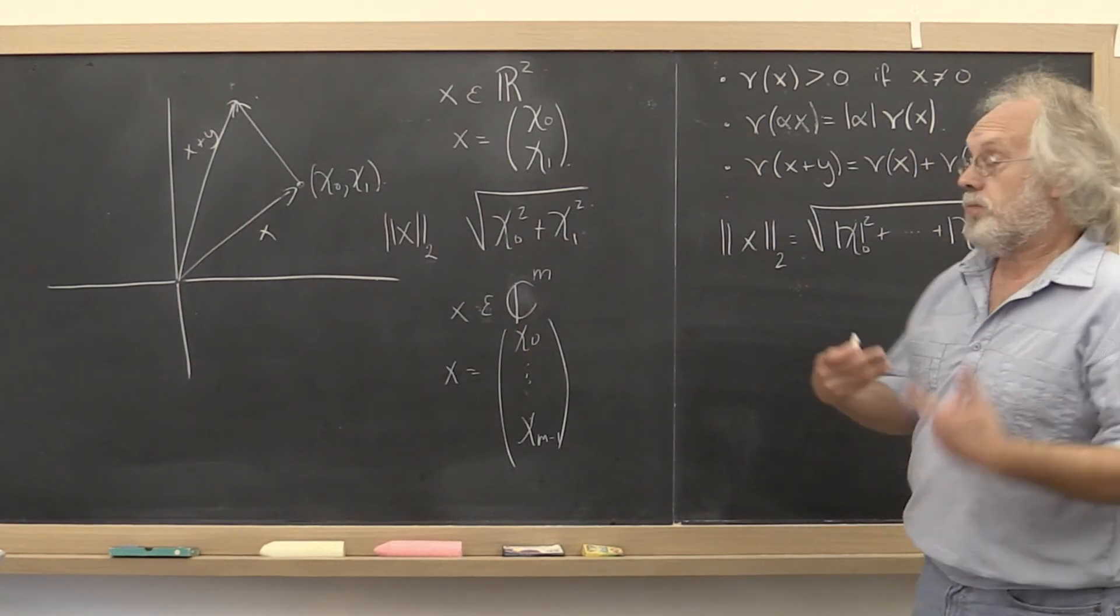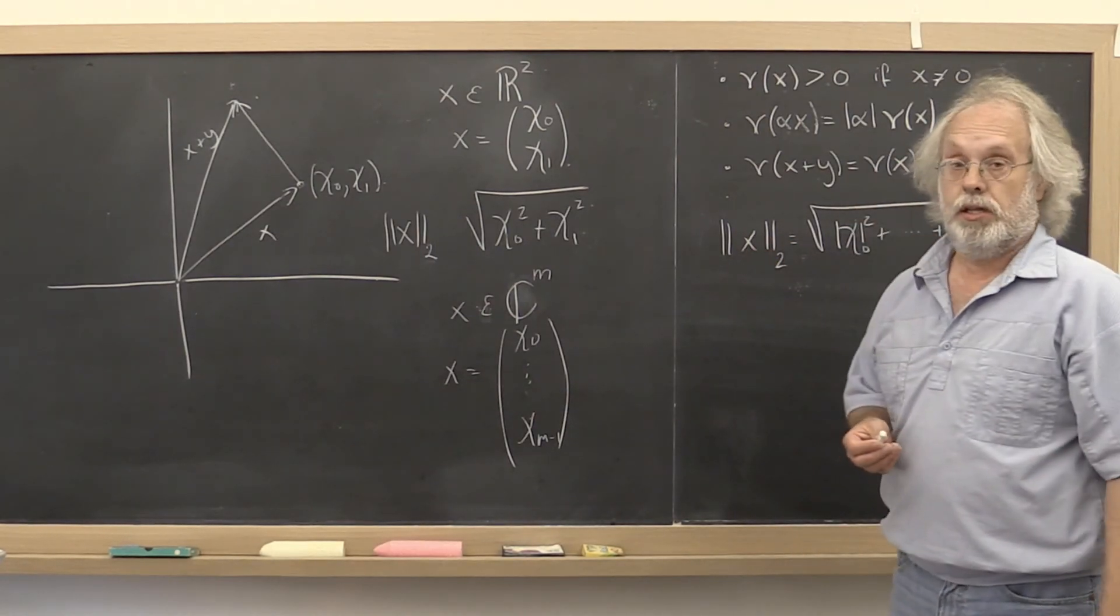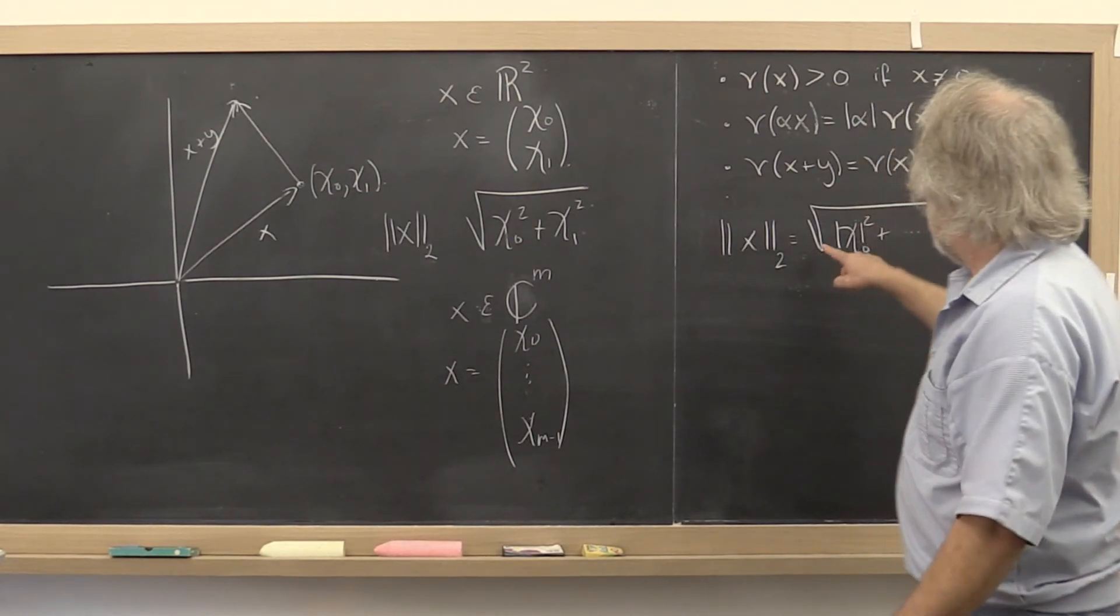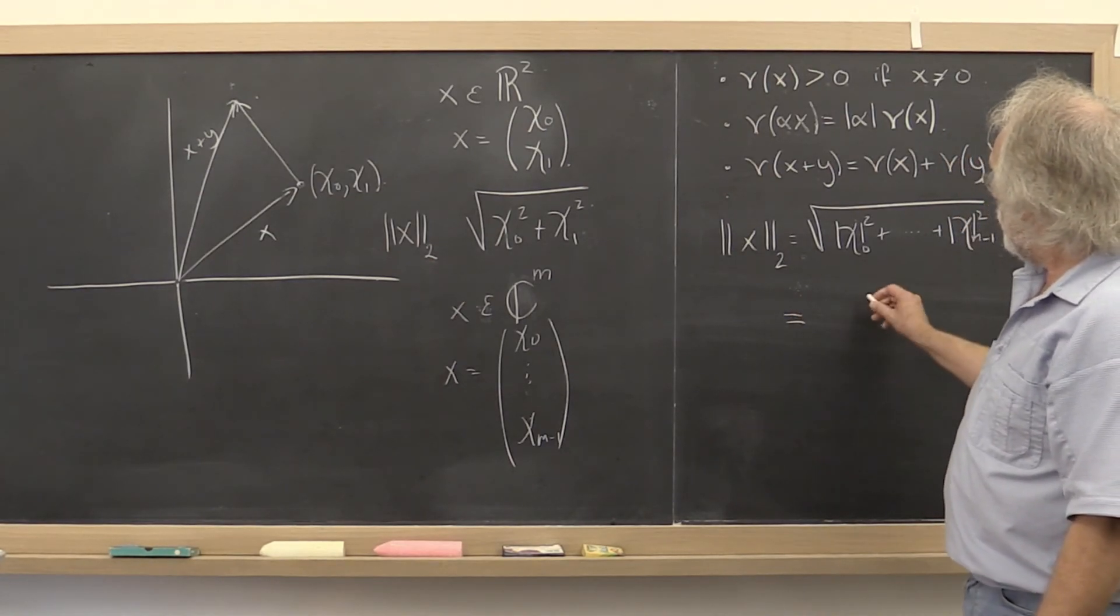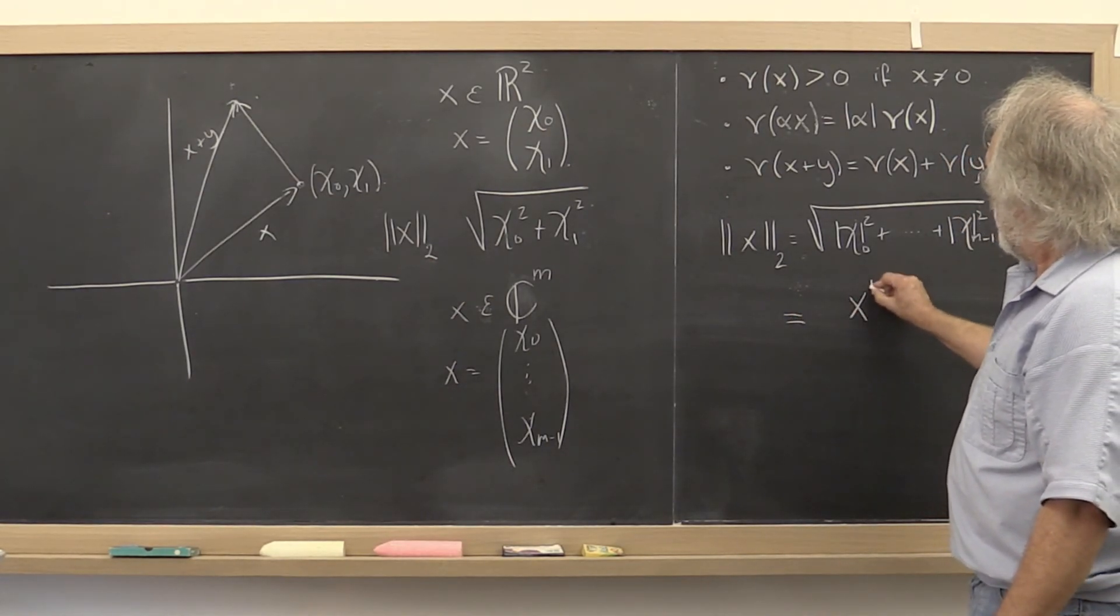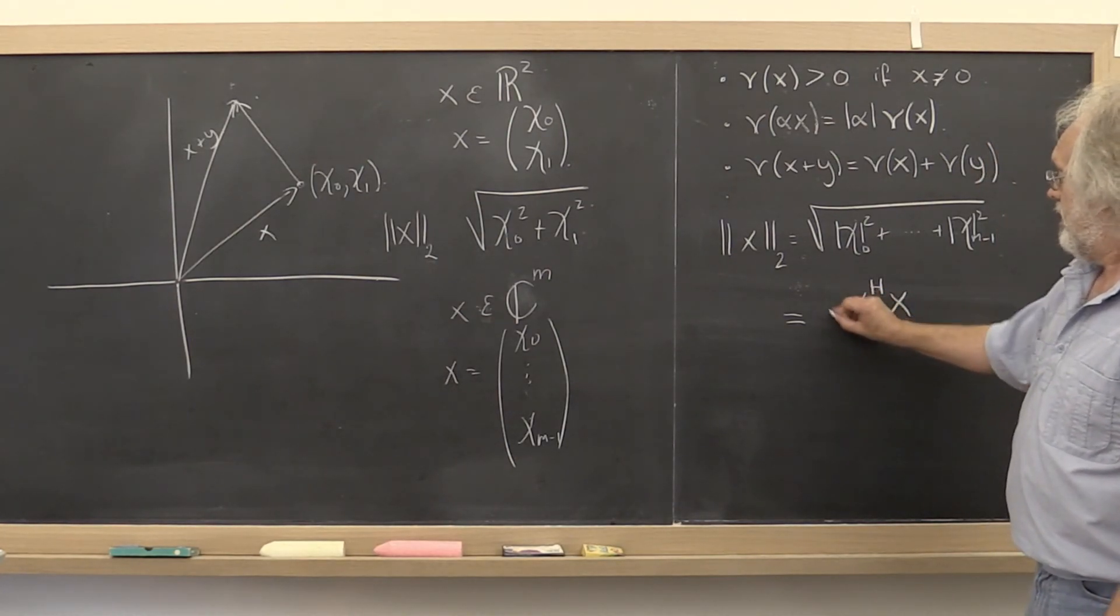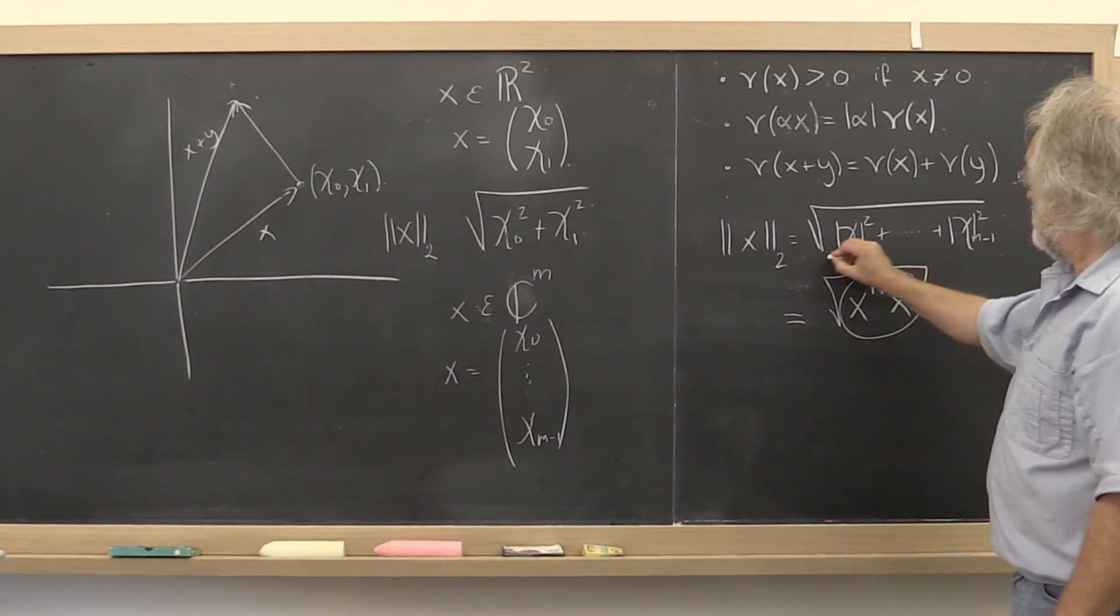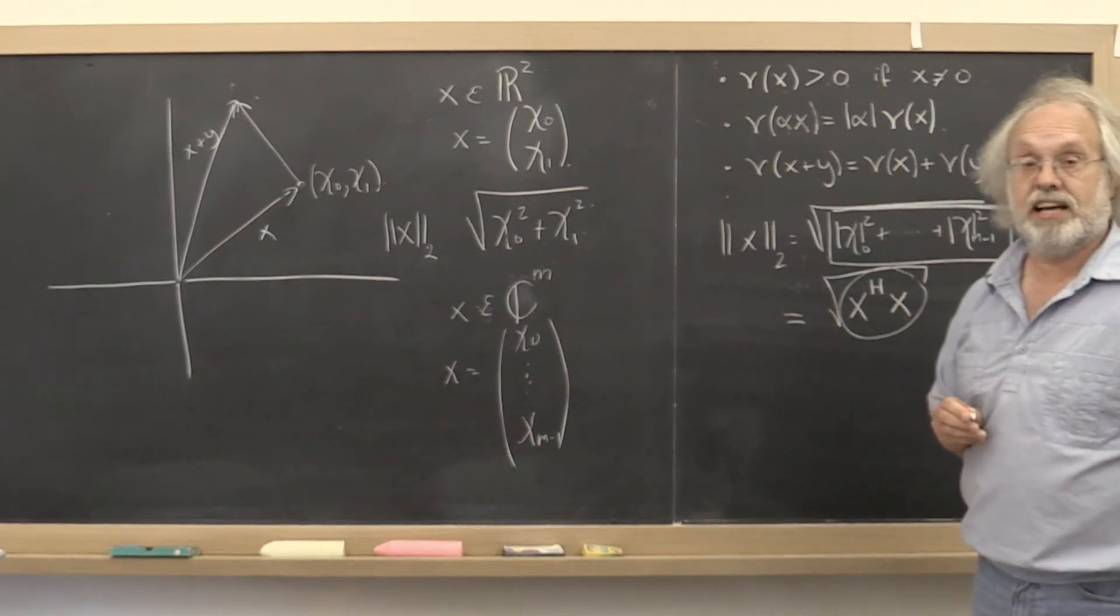And it's going to be an exercise for you to now go and show that this indeed is true. And one thing to keep in mind is that this expression right here is actually also equal to the Hermitian dot product xᴴx and then taking the square root of that. And the definition of this is exactly that.